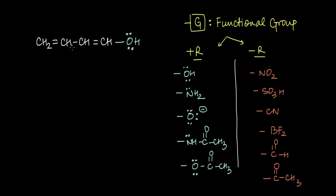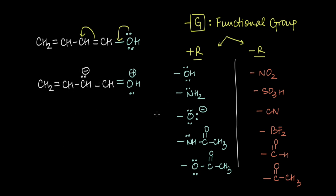As you can see, we have a lone pair that is in conjugation with a double bond, so we can have a resonance here. This lone pair of electrons can move over here while the pi electrons can move over to this carbon atom. This leads to the formation of a new resonating structure where the lone pair forms a pi bond, giving a +1 formal charge to the oxygen atom and a -1 formal charge to this carbon atom.